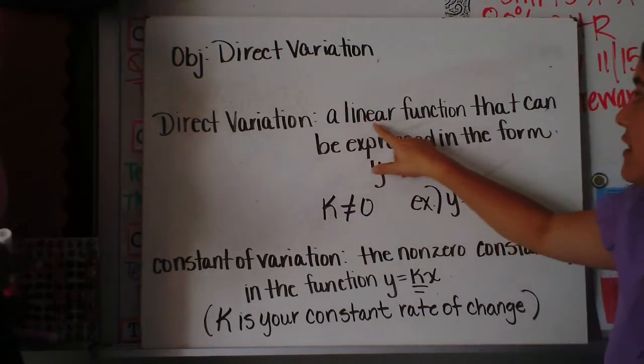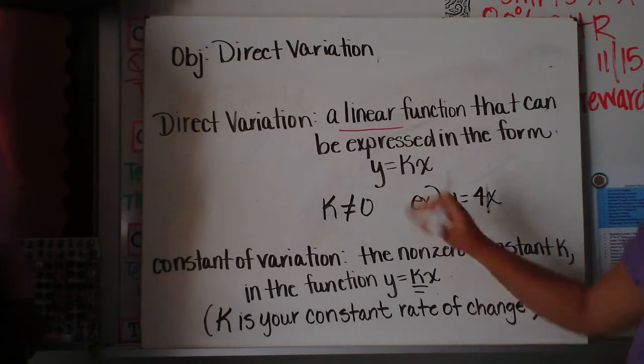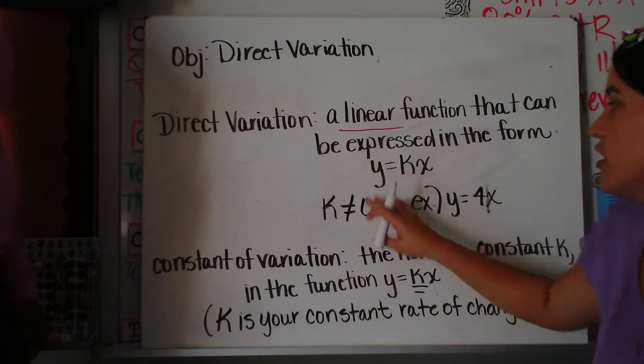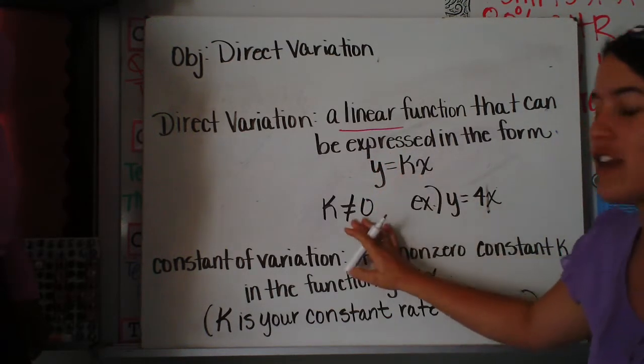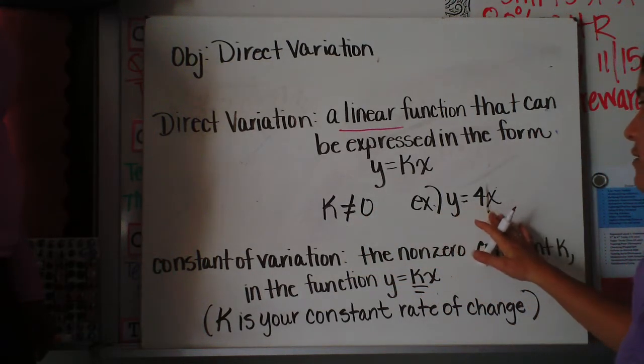that can be expressed in the form y equals kx. So this is just the form that you're going to see a direct variation. And when you have this, we know that k is not going to be 0. And here's an example, y equals 4x.